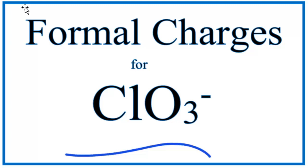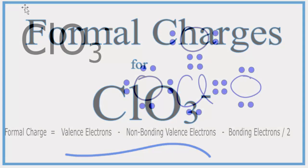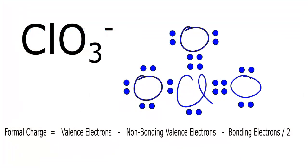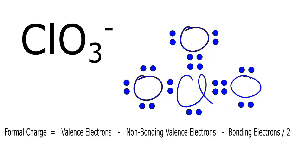We have in front of us the Lewis structure for ClO3-, the chlorate ion, and you'll notice that chlorine has more than eight valence electrons around it — it's an exception to the octet rule. We want to see if this is the best, most favorable Lewis structure for ClO3-. To do that, we'll calculate the formal charges.